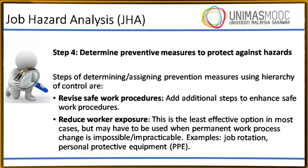Reducing worker exposure is the least effective option in most cases, but may have to be used when permanent work process change is impossible or impracticable. Examples include job rotation and using personal protective equipment, PPE.